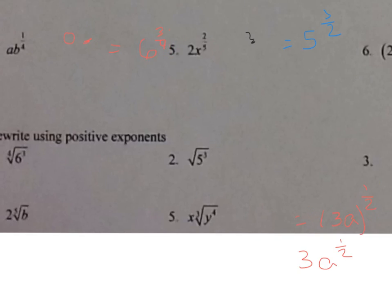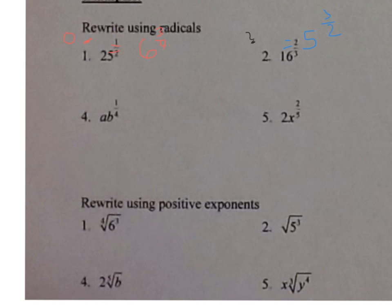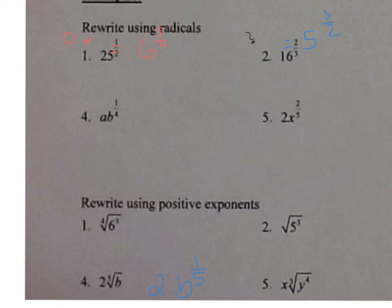Example 4: 2 times the fifth root of b — the 2 is outside the radical, so only b gets the fractional exponent. It's 2 times b to the one-fifth power. Example 5: x times the cube root of y to the fourth power — only y to the fourth is under the radical, so it's x times y to the four-thirds power. That's it — we'll do more examples in class tomorrow. Have a good night.